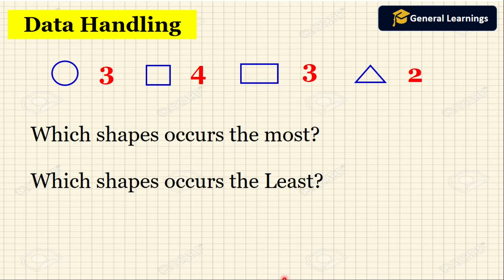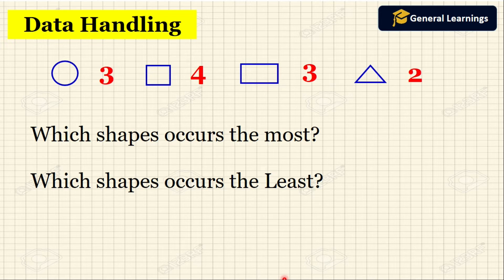Now we are going to answer these questions. Which shape occurs the most? That means which shape is occurring more number of times. Here they have given circle as three, square as four, rectangle as three, triangle as two. So which occurs most? Square occurs four times. So the shape that occurs most is square.